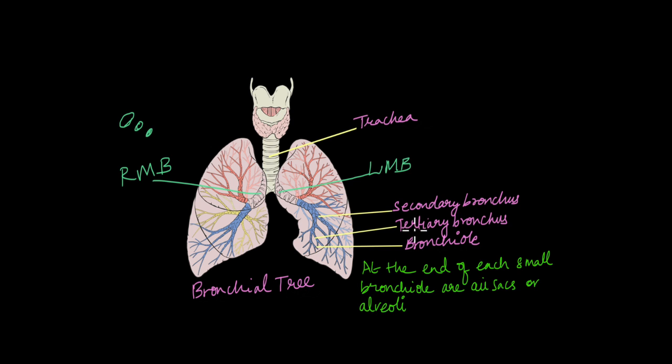Now finally, the secondary and tertiary bronchi become even smaller tubes known as bronchioles. So each of these tubes that you see here in this image, these are bronchioles. And this entire structure that is made up of the two main bronchi, the secondary bronchi, the tertiary bronchi and the bronchioles, that is known as the bronchial tree.